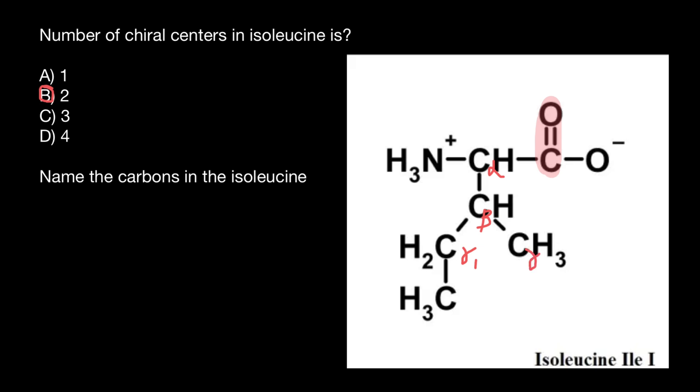So gamma two. And of course, the fourth carbon here: alpha, beta, gamma, and delta. So delta is the fourth letter in the Greek alphabet.